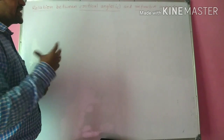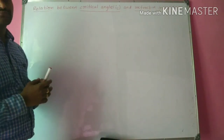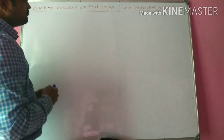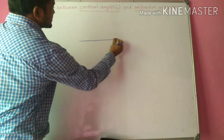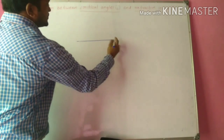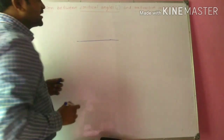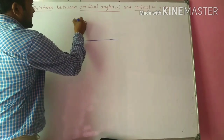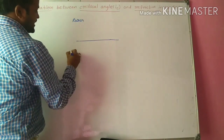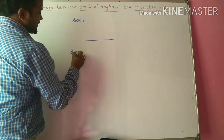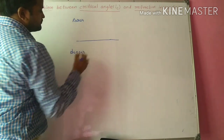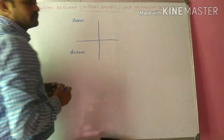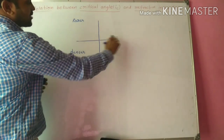Before starting the derivation, let us discuss what is critical angle. Let us consider this is the interface or the boundary between rarer medium and denser medium. This is the rarer medium and this is the denser medium. Let us consider this is the normal at this point, normal to the interface.